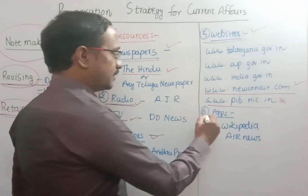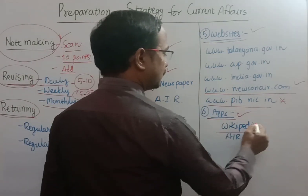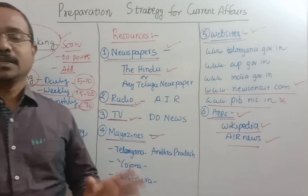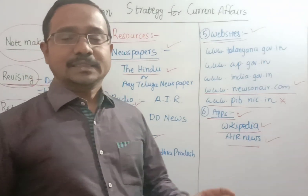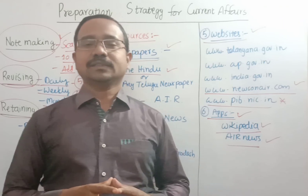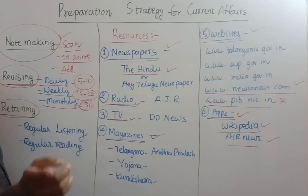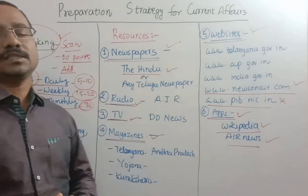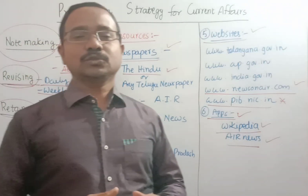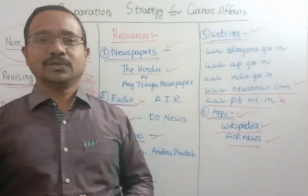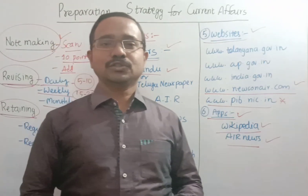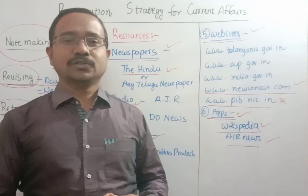The last step is which apps to use — Wikipedia and the All India Radio news app are the recommended resources for current affairs. In summary: read a newspaper daily, make notes from the newspaper, revise and retain them, and add information through these resources. I hope you enjoyed this video and gained knowledge through these links and resources. Continue your preparation for current affairs in this manner. Thank you.